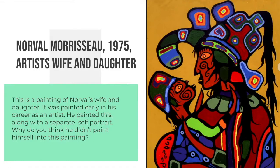So let's go back to this painting. This is the title of the painting — it's called Artist's Wife and Daughter, and it was painted in 1975. So this is a painting of Norval's wife and daughter. The two people we see in here are a mom and a child, and he painted this early in his career as an artist, along with a separate self-portrait of himself.